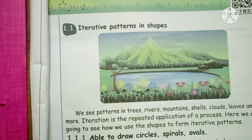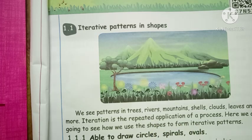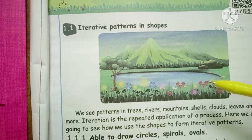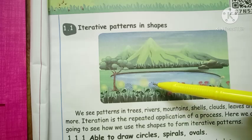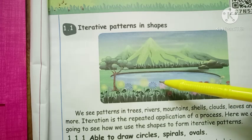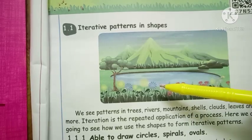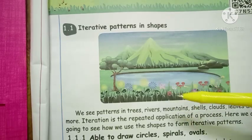Iterative is the repeated application of a process. This one is having some repeated shapes — circle shapes. The circle shapes are rotated here. So this flower is having some different kinds of shapes. This shape is called iterative patterns.